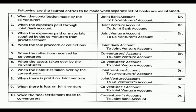Eighth entry: at the end of the joint venture, if there is profit — Joint Venture Account Dr. to Co-ventures Account; if there is loss — Co-ventures Account Dr. to Joint Venture Account. Ninth entry: when final settlement is made to co-ventures — Co-ventures Account Dr. to Joint Bank Account, recording the name of each co-venture in their respective account. Though journal entries may not be asked for 14 marks, one should know at least these entries.